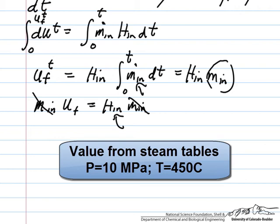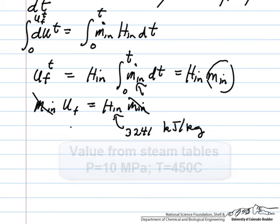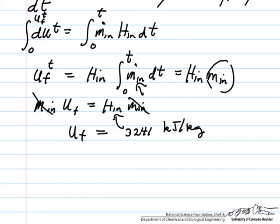We can look this value up in the steam tables. So that means that of course u_final is equal to this value, and so we have the final internal energy, and we have the final pressure - the pressure is 10 MPa.